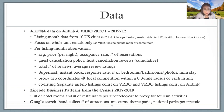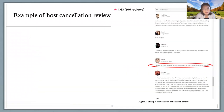We also did some Google searches to hand-collect the number of attractions, museums, theme parks, and national parks per zip code. Because this is not time-varying, it's typically absorbed by zip code or listing fixed effects. But the zip code business pattern survives because we observe time-varying numbers of hotels and restaurants.